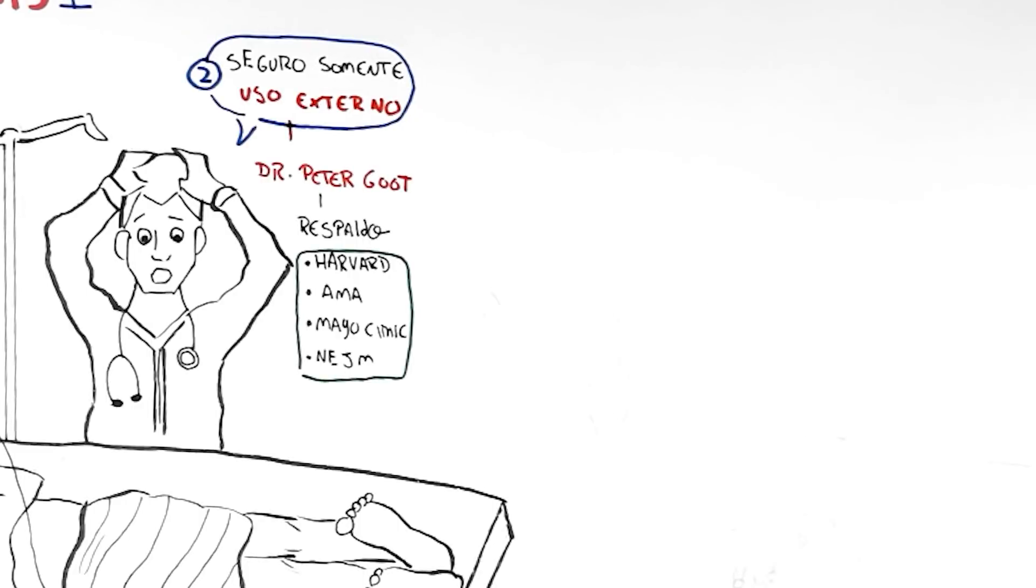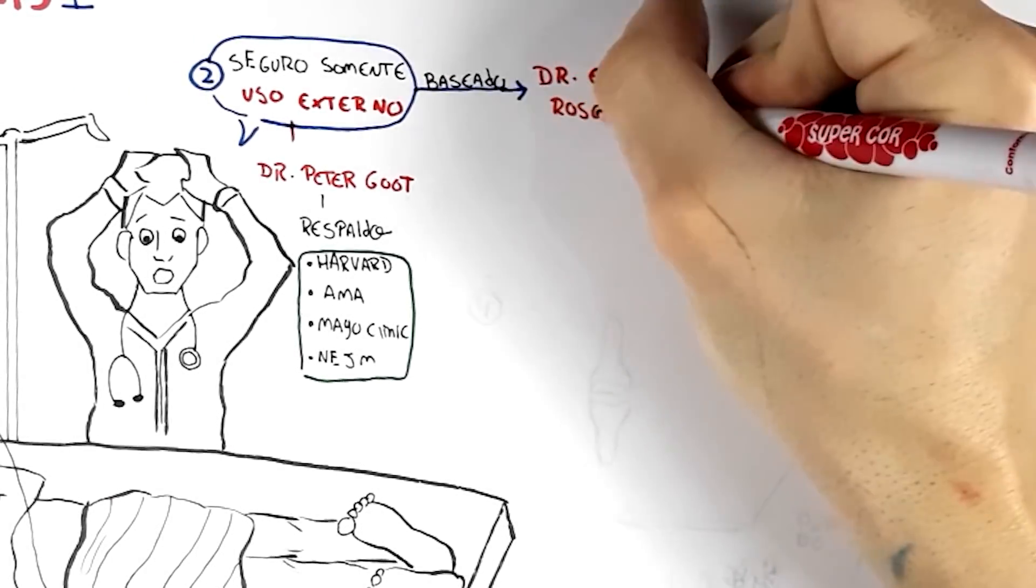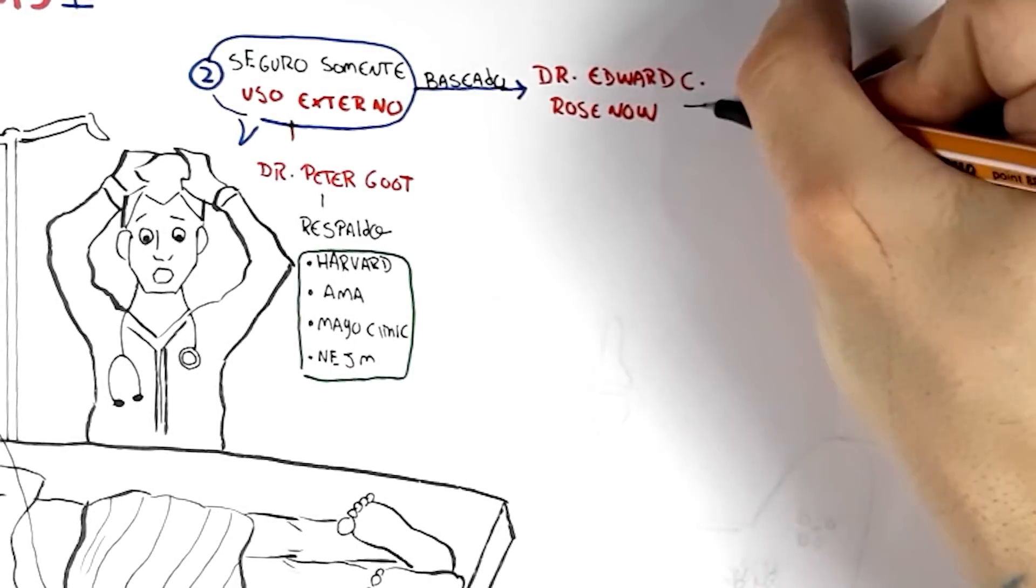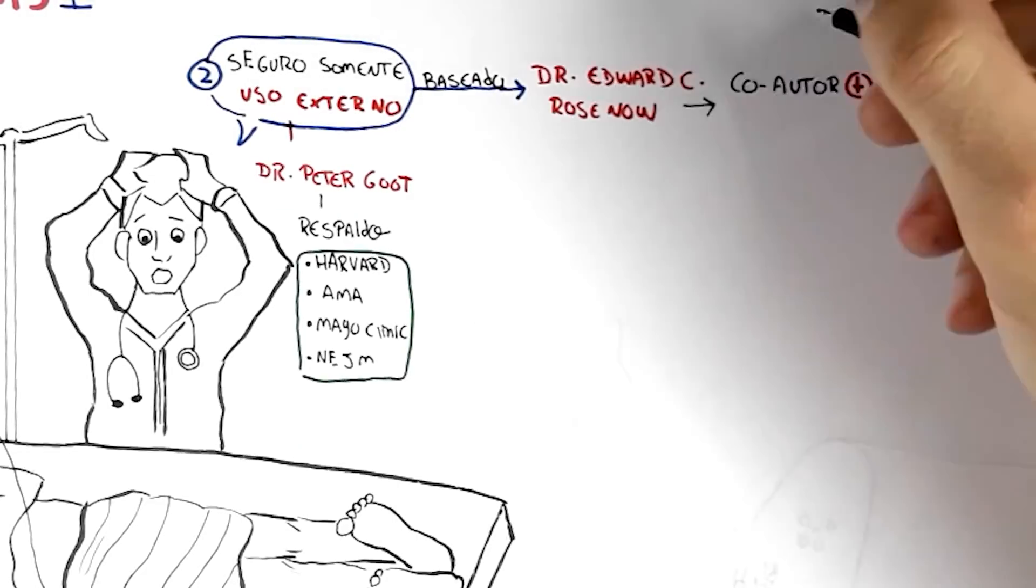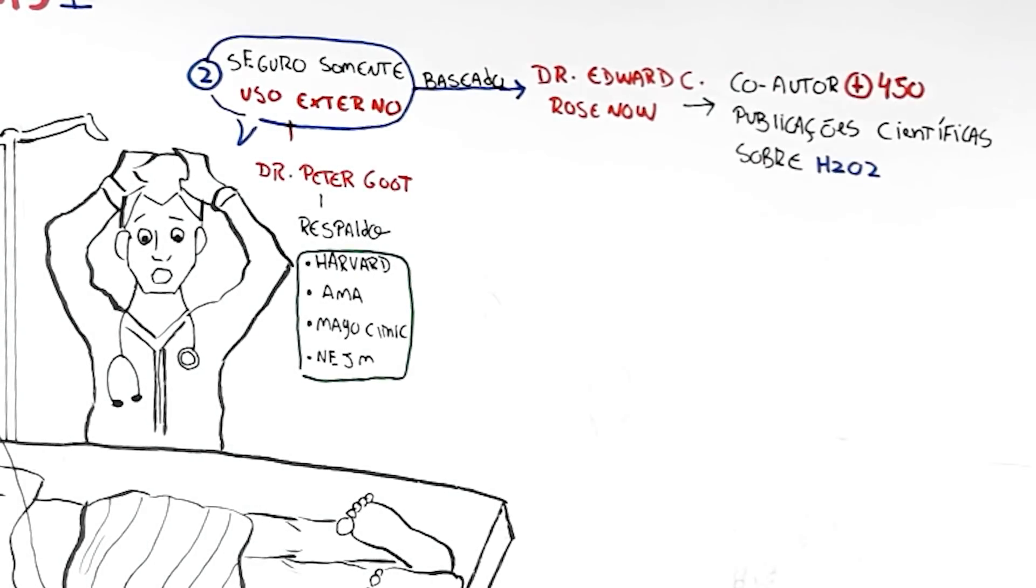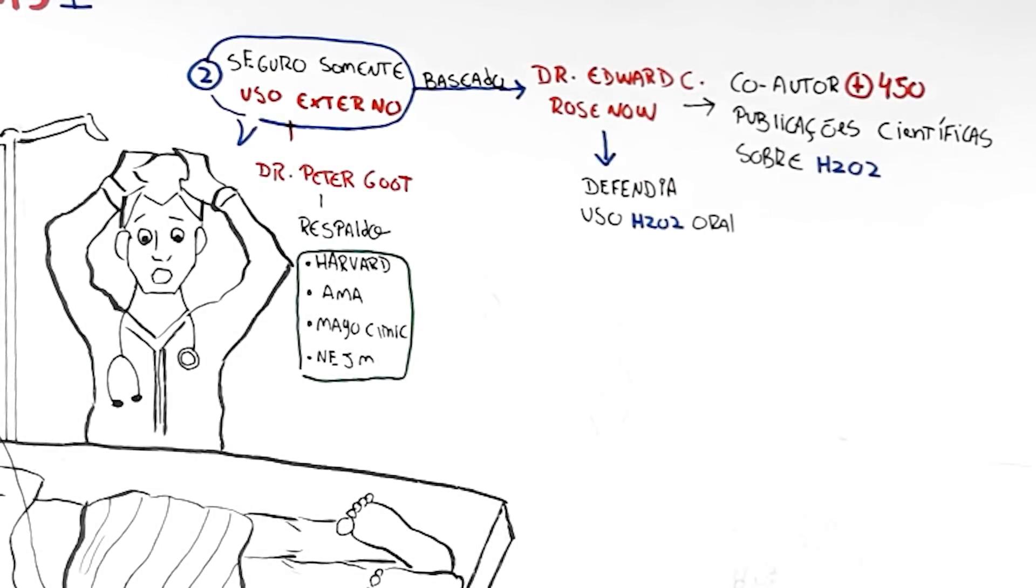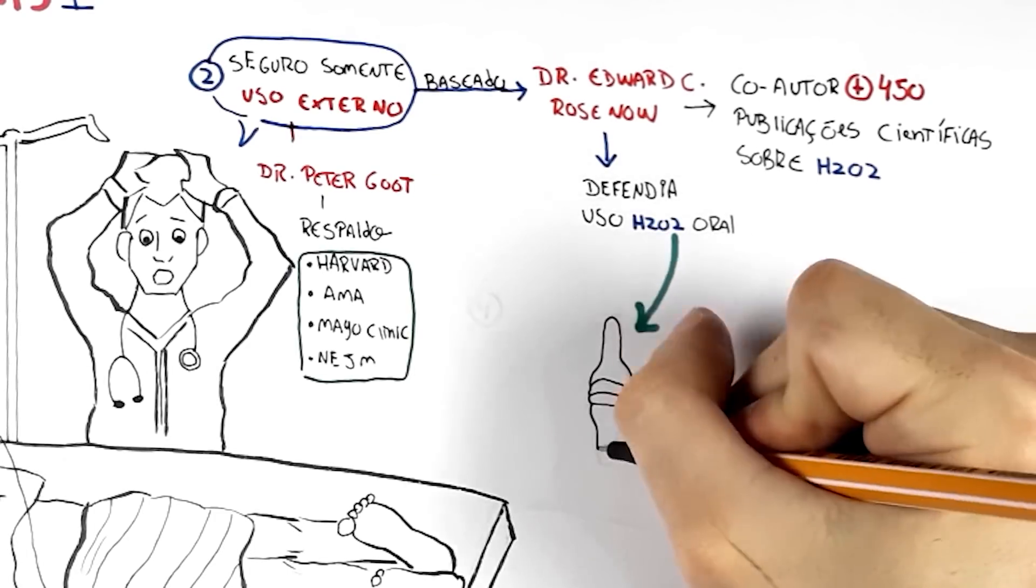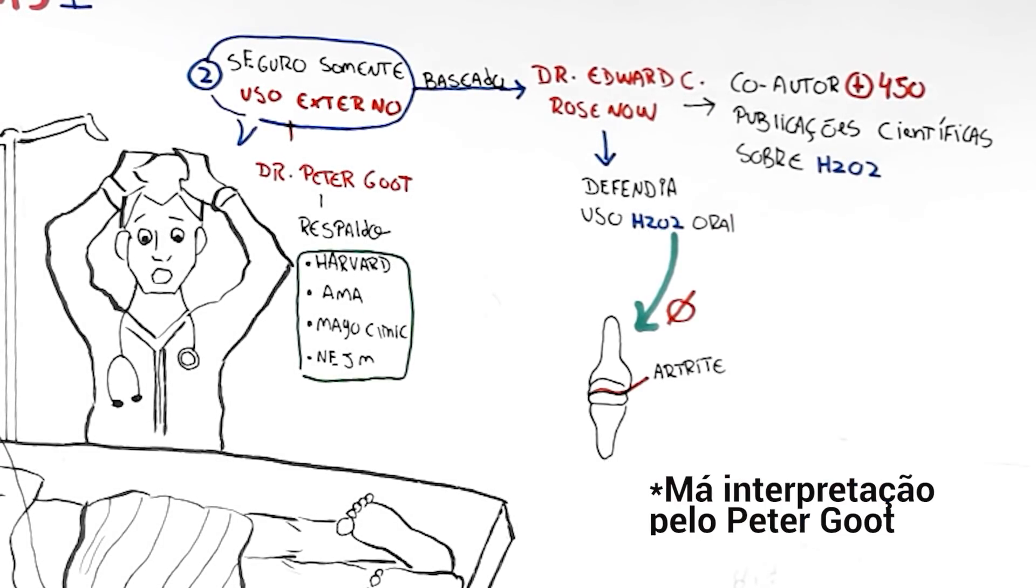However, the doctor forgot to mention that the statements he made were based on studies by Dr. Edward C. Rosenau, co-author of more than 450 publications about hydrogen peroxide, and that in reality he defended the use of peroxide, even orally, to treat cases of arthritis. Possibly a bad interpretation of these studies.